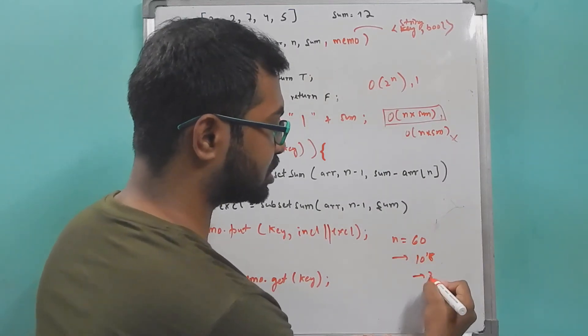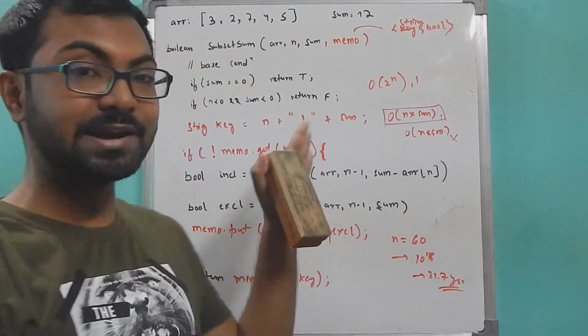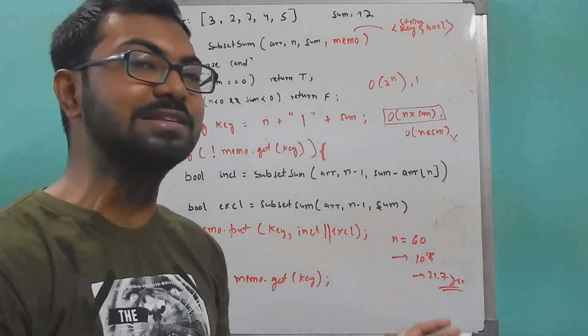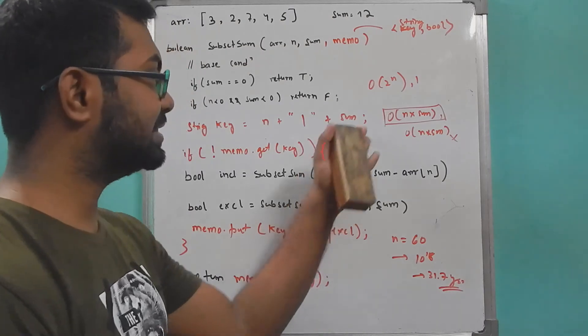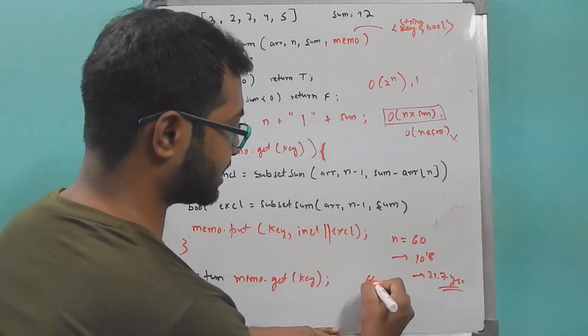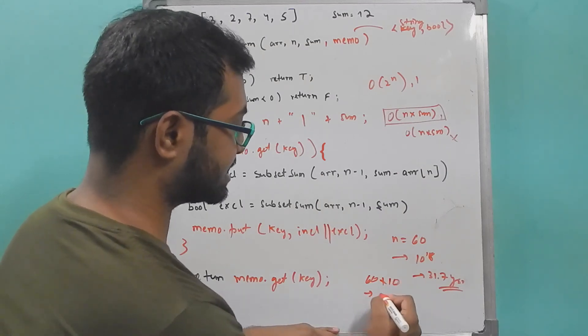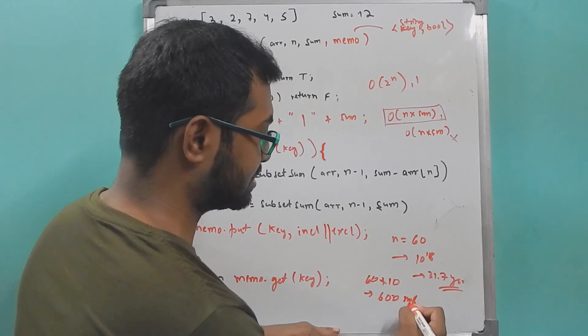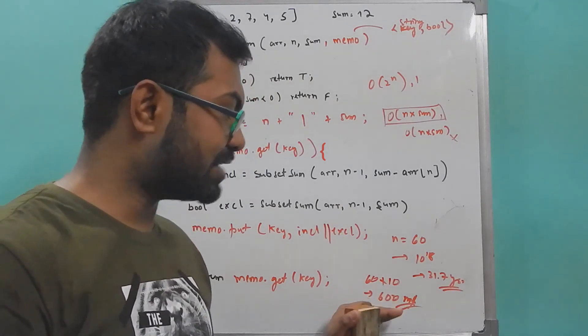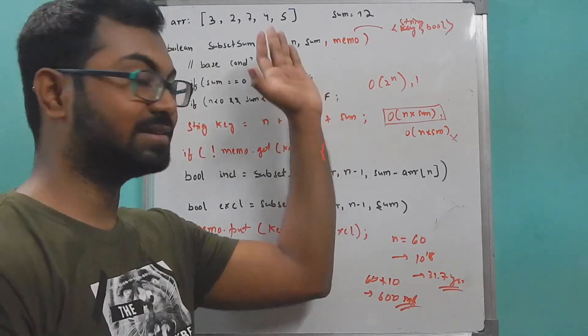If you take n value equals 60, so 2 to the power n becomes 10 to the power 18 and that will become 31.7 years is the time taken by the backtracking solution. You can watch my time complexity part 1 video for that. In this case, let's say n equals 60 again and sum equals 10 - in this case it will be 600, and that equals 600 nanoseconds. See the difference between nanoseconds and total years - that's what complexity is useful for.